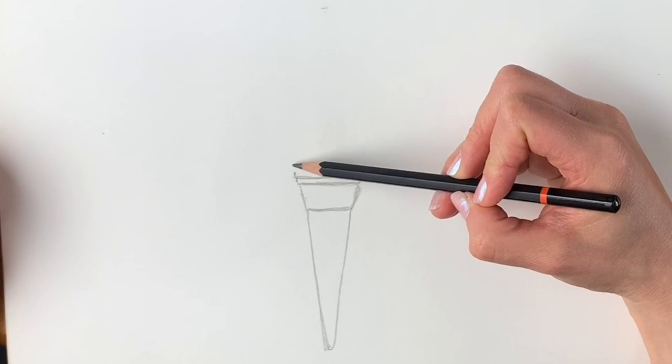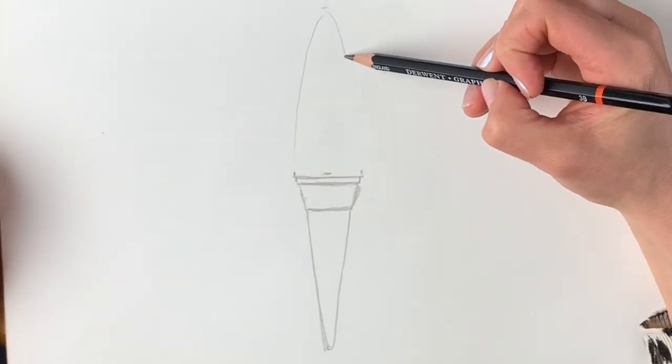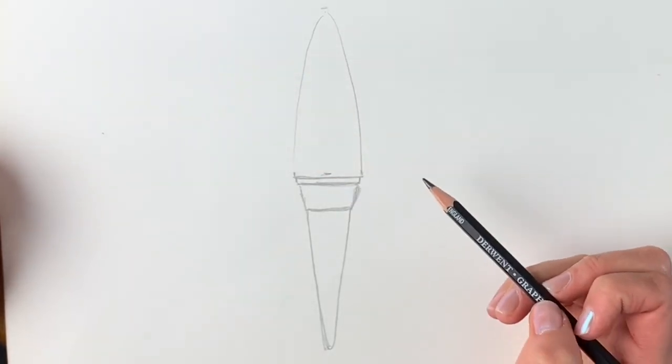Now we're going to draw a cone shape going upwards and downwards, and we're going to follow this when we draw the ice cream.